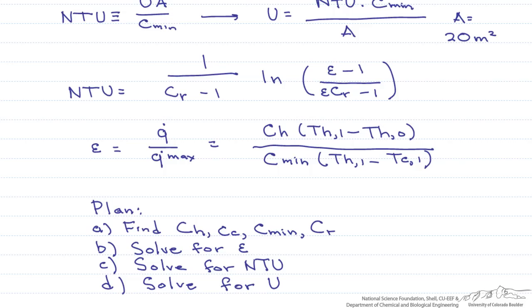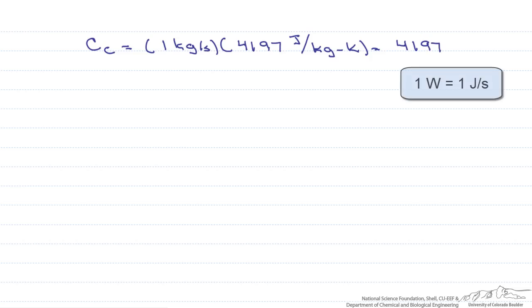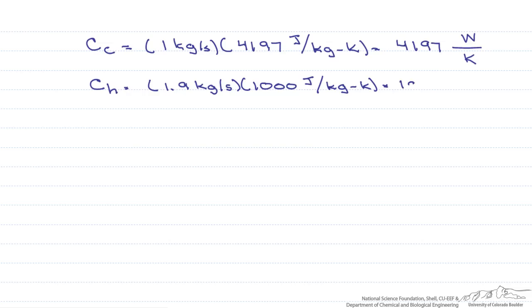Let's go ahead and do this. First, we have these heat capacity rates. The cold heat capacity rate is its mass flow rate, so C sub c is 4,197 watts per K. Our hot heat capacity rate is the mass flow rate of the gas times the heat capacity of the gas, and that's going to equal 1,900 watts per K.